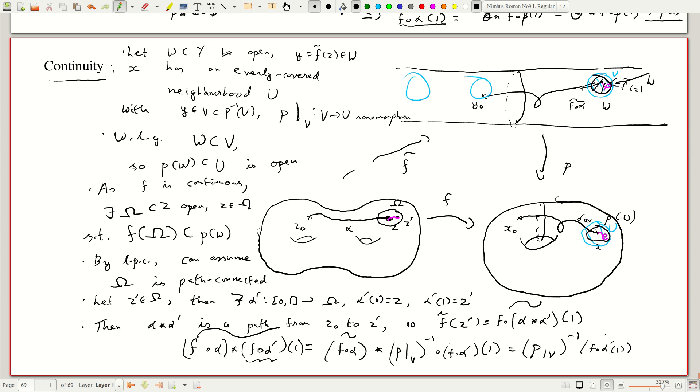But f composed with alpha prime of 1, remember by construction, this was a path inside this small neighborhood. So this guy belongs to p of w. So this thing is actually in w.